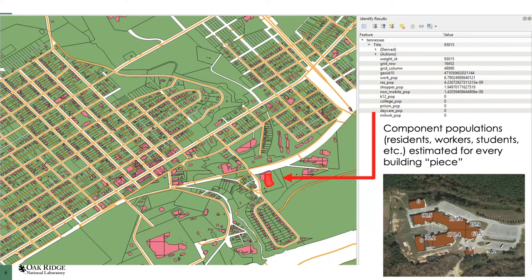For each segment of a building, we can get information about the different land use types, census blocks, everything we need to understand what's going on in that building and try to assign a population to those building segments. For all the buildings we have data for in the US, we can assign probabilities — estimates of population in each building segment based on everything we know about it, including schools, prisons, nursing homes, and daycares. This gives us a lot of flexibility to model where the population is, and it's a lot easier to update our data year to year because we're not doing vector-to-raster conversion. It's actually improved our processing time because we're only doing the raster stuff right at the very end.